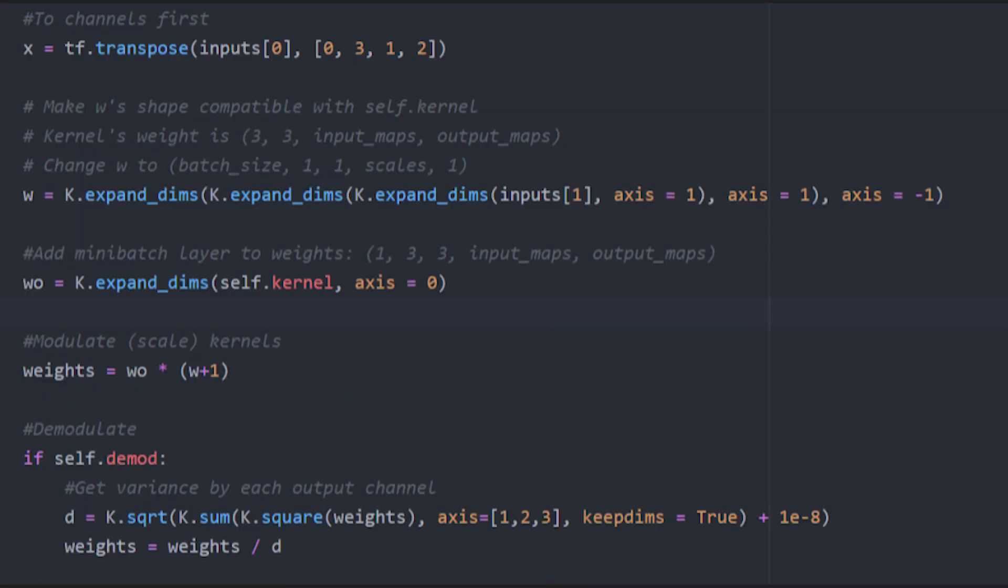The first thing I did was change my configuration to channels first instead of channels last. This just made reshaping easier later in the function and I changed back the channels last at the end of the function.